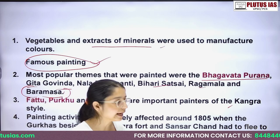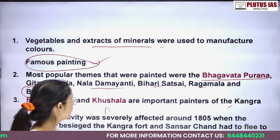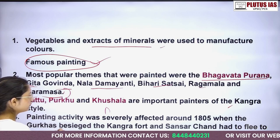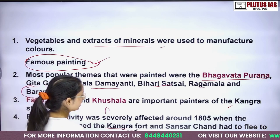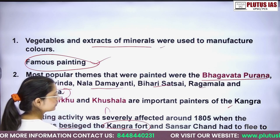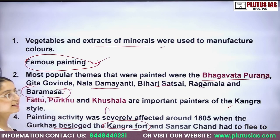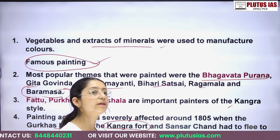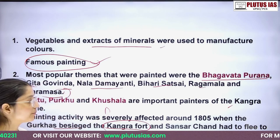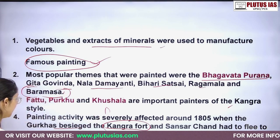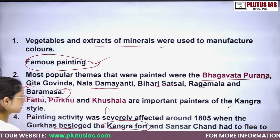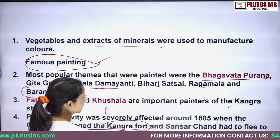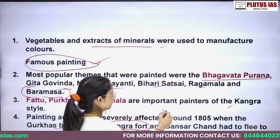The decline of the Kangra School of Paintings began when the Gorkhas attacked the Kangra Fort. Raja Sansar Chand had to flee to the palace at Tira Sujanpur, which is in Hamirpur.